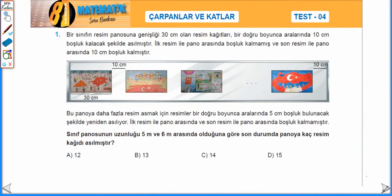Bir sınıfın resim panosunda genişliği 30 cm olan resim kağıtları bir doğru boyunca aralarında 10 cm boşluk kalacak şekilde asılmıştır. İlk resim ile pano arasında boşluk kalmamış ve son resim ile pano arasında 10 cm boşluk kalmıştır. Bu panoya daha fazla resim asmak için resimler bir doğru boyunca aralarında 5 cm boşluk bulunacak şekilde yeniden asılıyor. İlk resim ile pano arasında ve son resim ile pano arasında boşluk kalmamıştır.